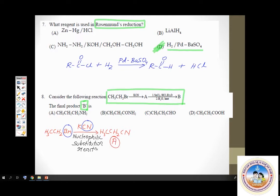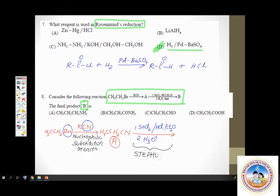Now product A is treated with this whole set of reagents. The reagents are: stannous chloride in suspension in ether saturated with HCl, and the second step is hydrolysis. This reminds us of the very important reaction with nitrile called Stephen reduction. In Stephen reduction, the nitrile part gets converted to an aldehyde.